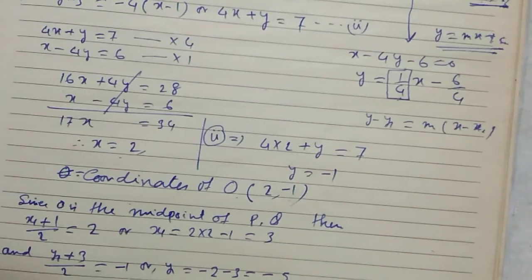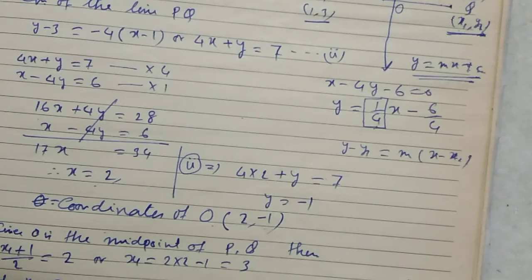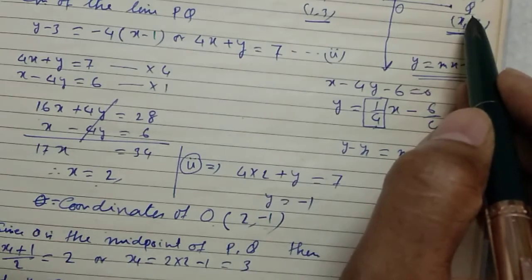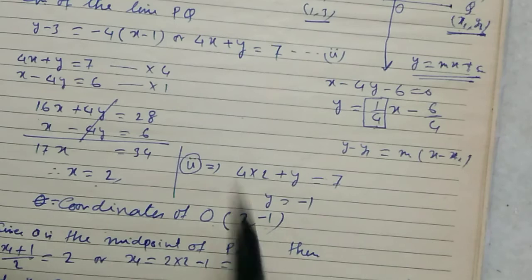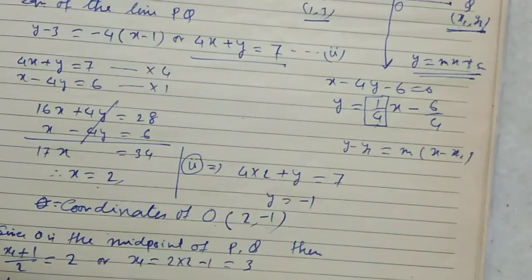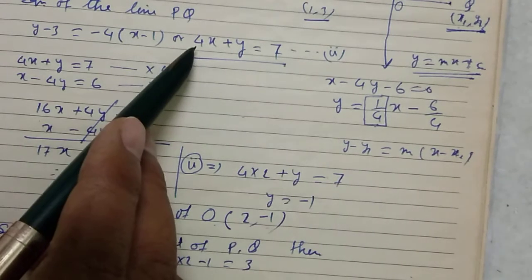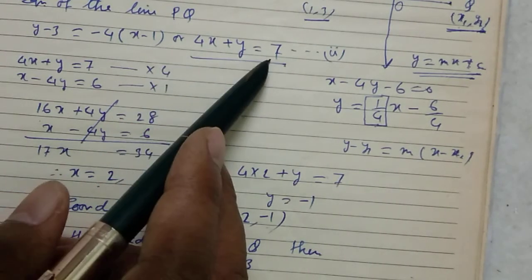We can verify this answer which is correct or wrong. Since Q lies on PQ, if we put point Q on this equation, Q must satisfy that equation. We can check it: 3 into 4 is 12, 12 minus 5 equals 7. Hence.